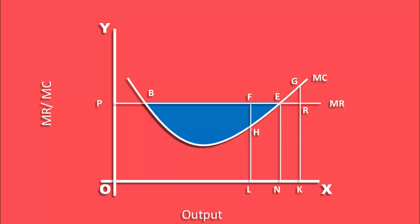So, the firm is in equilibrium when it equates its marginal cost with marginal revenue. At the point of equilibrium, the marginal cost curve must cut the marginal revenue curve from below.